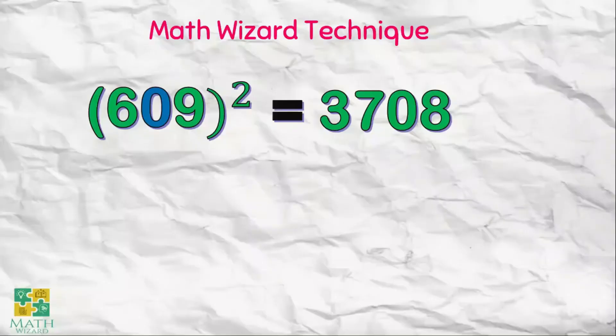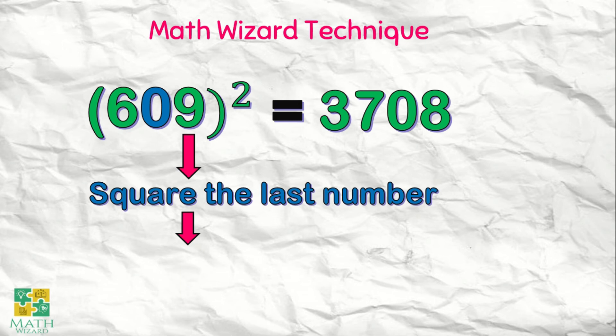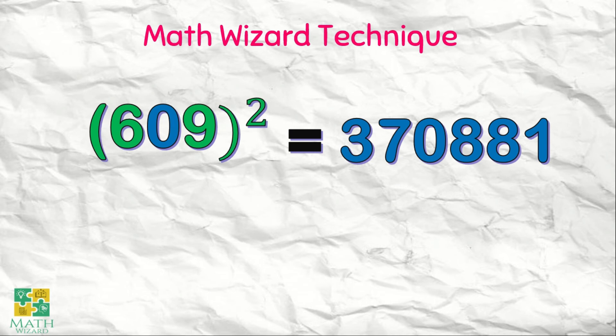For the last step, we square the last number. The square of nine is 81. Therefore, the square of 609 is 370,881. Don't forget the steps. Don't forget to master the square numbers. To review: step one, square the first number. Step two, multiply the first and the last number and double it. Step three, square the last number.